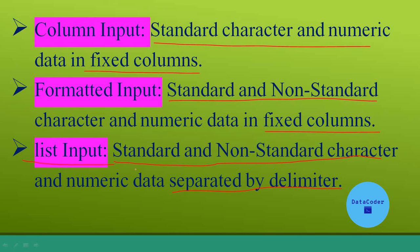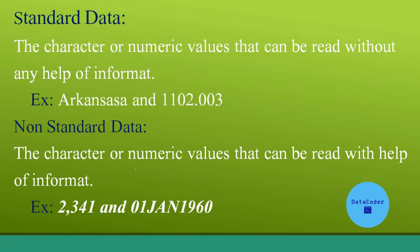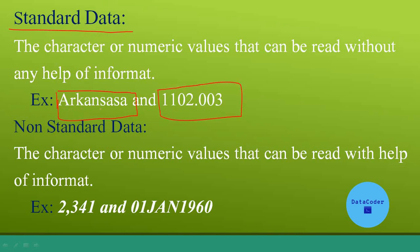So these are the three methods. Now let's see what standard data and non-standard data are. Standard data is something which SAS can read without any help of an informat. If the data has no format and we didn't apply any format to the data, then SAS can read that data without using any informat — that is called standard data. So mostly character data are standard data. This is a standard character data and this is a standard numeric data. Here we didn't use any format in the data, that's why it's called standard data, and while reading those data, SAS will read it without using any informat.